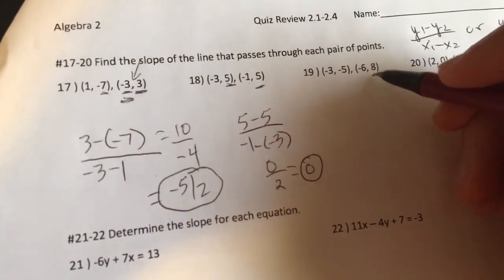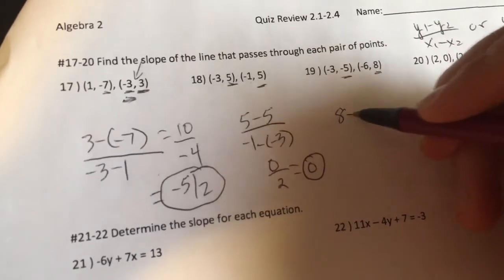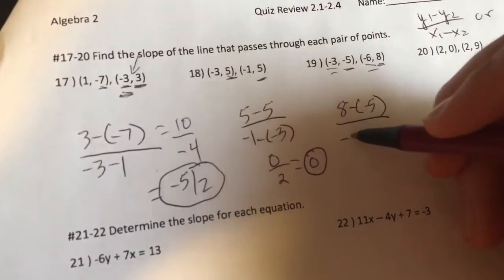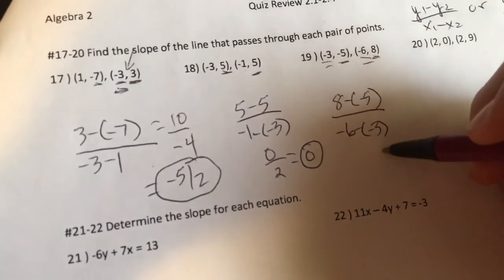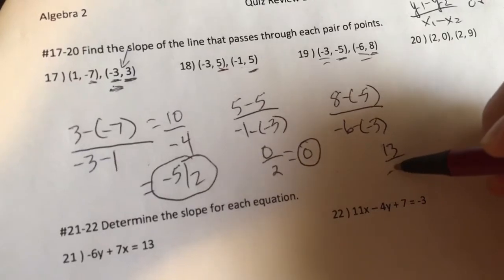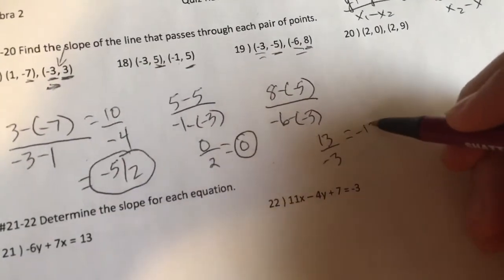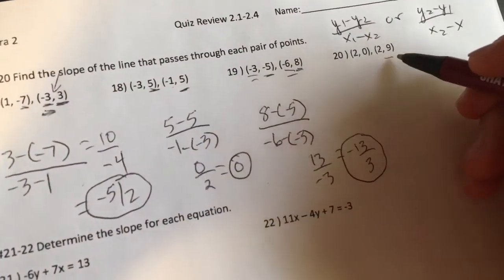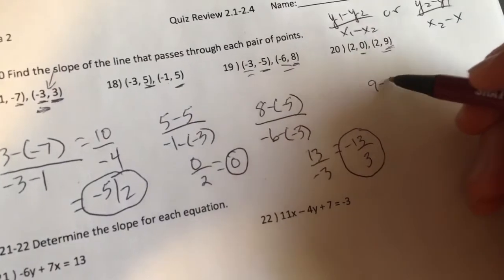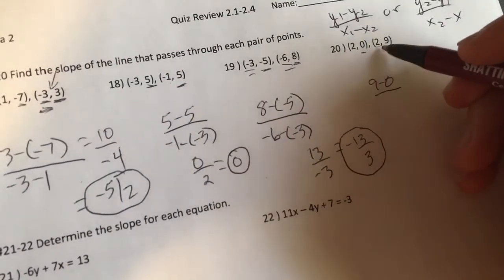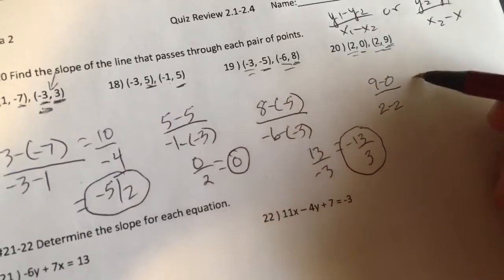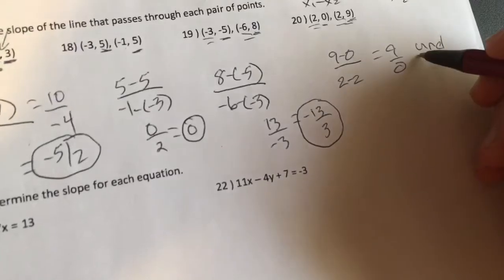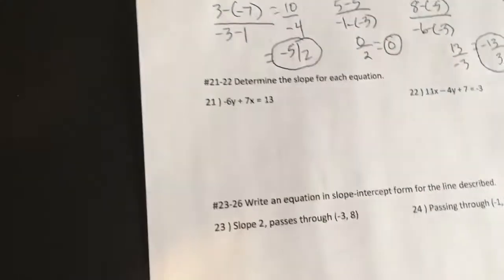All right. Next one here. I'm going to do 8 minus a negative 5. 8 minus a negative 5. All over negative 6 minus a negative 3. That's going to give me 13 over negative 3, which I should really put that negative on the outside. Negative 13 thirds. And lastly here, folks, I'm going to do 9 minus 0. All over 2 minus 2. Uh-oh. This presents a problem. 9 divided by 0 is a math sin. Don't do it, guys. That is undefined. Undefined.